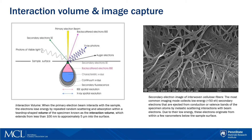Right here we have a secondary electron image of interwoven cellulose fibers. The most common imaging modes collect low-energy, less than 50 eV secondary electrons that are ejected from conduction or valence bands of the specimen atoms by inelastic scattering interactions with beam electrons. Due to their low energy, these electrons originate from within a few nanometers below the sample surface.